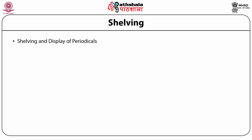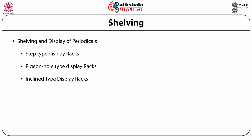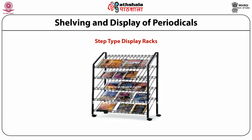Libraries display latest issues of periodicals in the general reading room or have a separate reading room where periodicals are kept and displayed. Periodical racks are used for displaying periodicals and are of three types: step type display racks, pigeon hole type display racks, and inclined type display racks. In step type display racks, periodicals are displayed step-wise — there are four to five steps in each rack and on each step four to five periodicals can be displayed. However, there is no provision to store back issues of periodicals in this type.